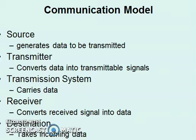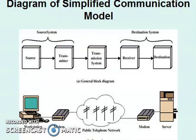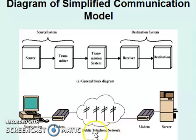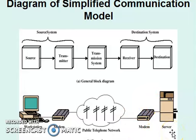Now let's look at the diagram of the simplified communication model. You can see the source, the transmitter, the transmission system, the receiver, and the destination. Looking at the bottom pictures, the source can be a workstation, the transmitter can be a modem which is a modulator and demodulator — essentially a transceiver. The carrier can be a public telephone network, and on the other end there is a destination with a modem and a server, workstation, or laptop.